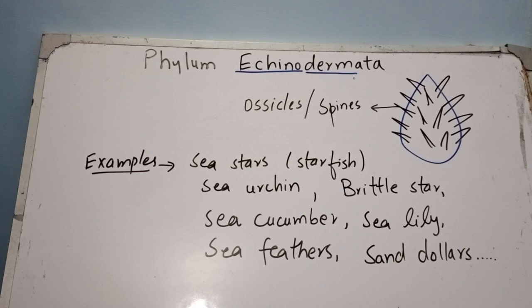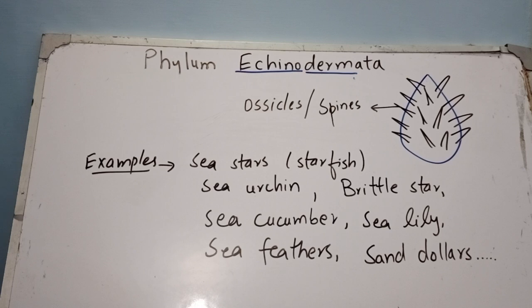I have drawn an oval shaped sea urchin whose body is covered with spines. All echinoderms have their body covered with spines, that is why they are known as spiny skinned animals. Other examples of Echinodermata include sea stars (commonly known as starfishes), sea urchins, brittle stars, sea cucumbers, sea lilies, sea feathers, and sand dollars.